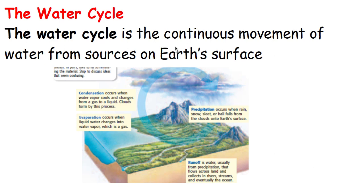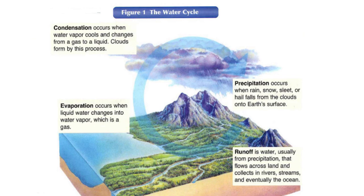Water cycle. The water cycle is the continuous movement of water from sources on the earth's surface. The parts of the water cycle are: condensation, evaporation, precipitation, and runoff.